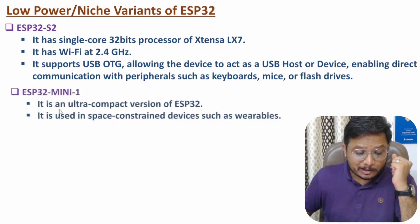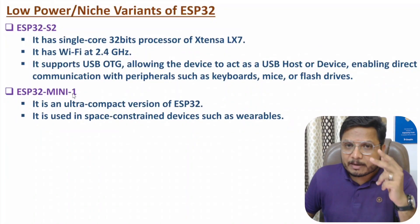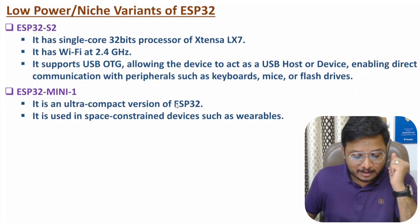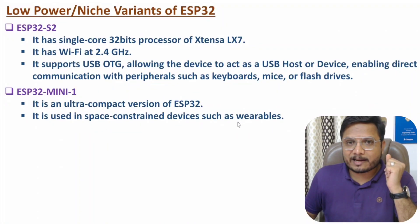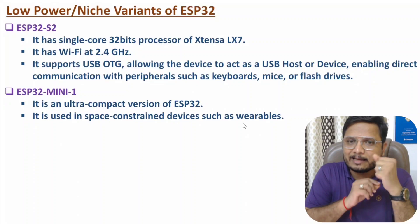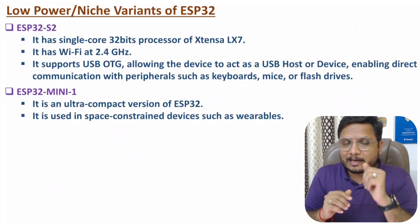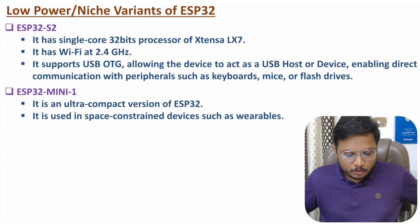The second low power module is ESP32 Mini 1. From the name itself, you can understand — it is an ultra compact version of ESP32. It is used in space-constrained devices such as wearables. In wearables, we have space constraints in which we need compact microcontrollers. So in that situation, one can go for ESP32 Mini 1.